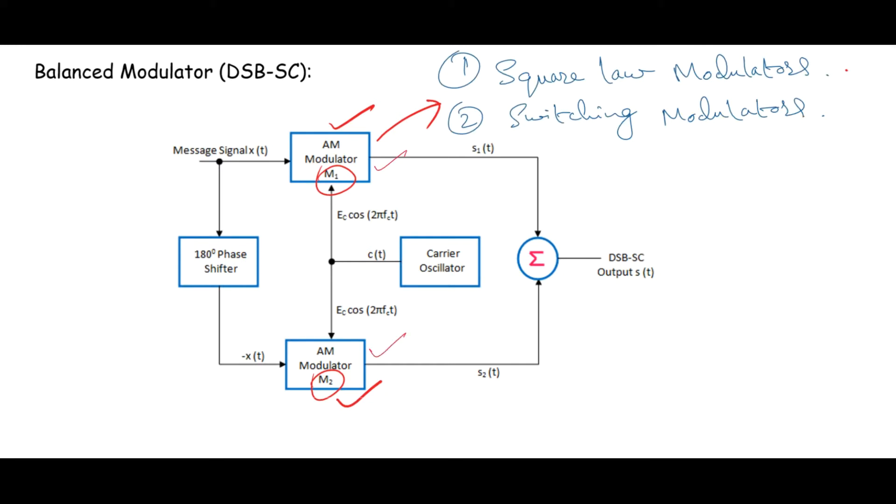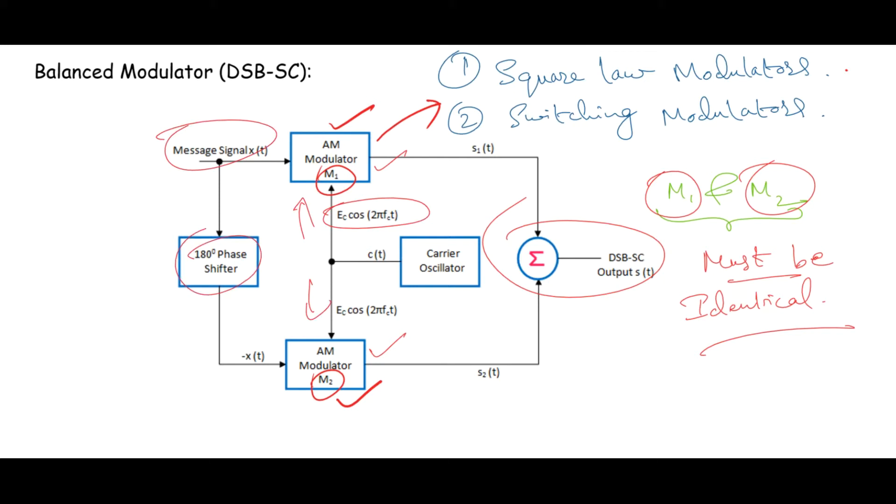Up to this point we are basically generating the DSBSC waveform only and suppression of carrier is being done at later stages. In this type of arrangement, the modulators M1 and M2 are to be selected such that they must be identical with each other. Herein both the modulators receive carrier in phase. But the modulating voltage XT appears 180 degrees out of phase at the input of both the modulators. Thereby the current outputs of both the modulators will get subtracted.